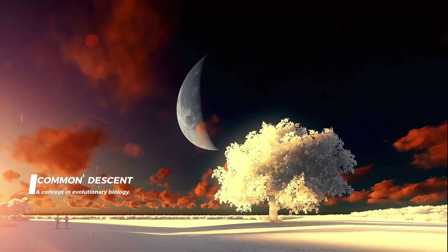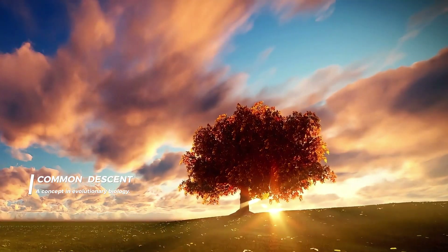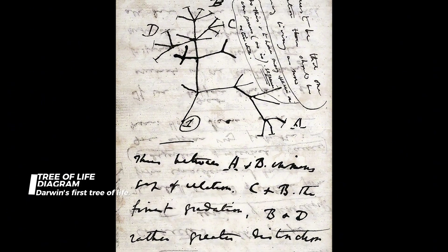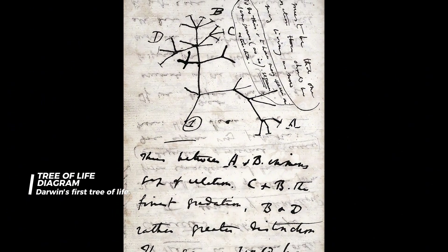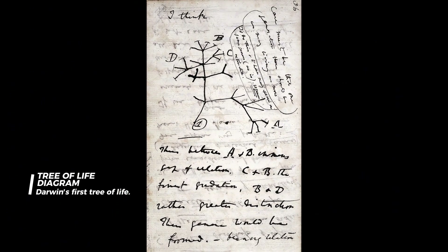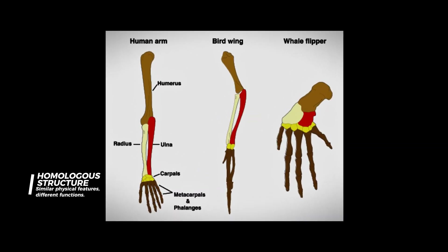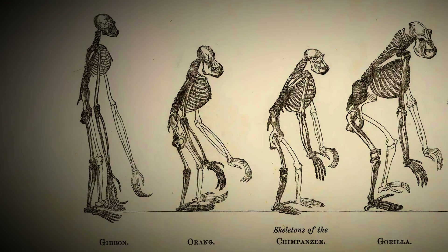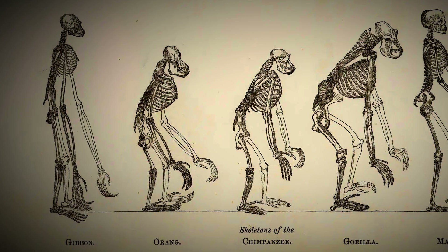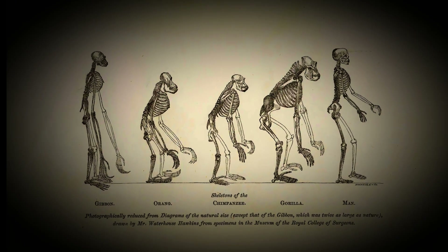Common descent, another cornerstone of evolutionary theory, suggests that all life forms share a common ancestor. The Tree of Life diagram visualizes this concept, tracing diverse lineages back to a shared origin. Homologous structures, like the forelimbs of whales, bats, and humans, showcase underlying similarities despite different functions, reinforcing the idea of common ancestry.